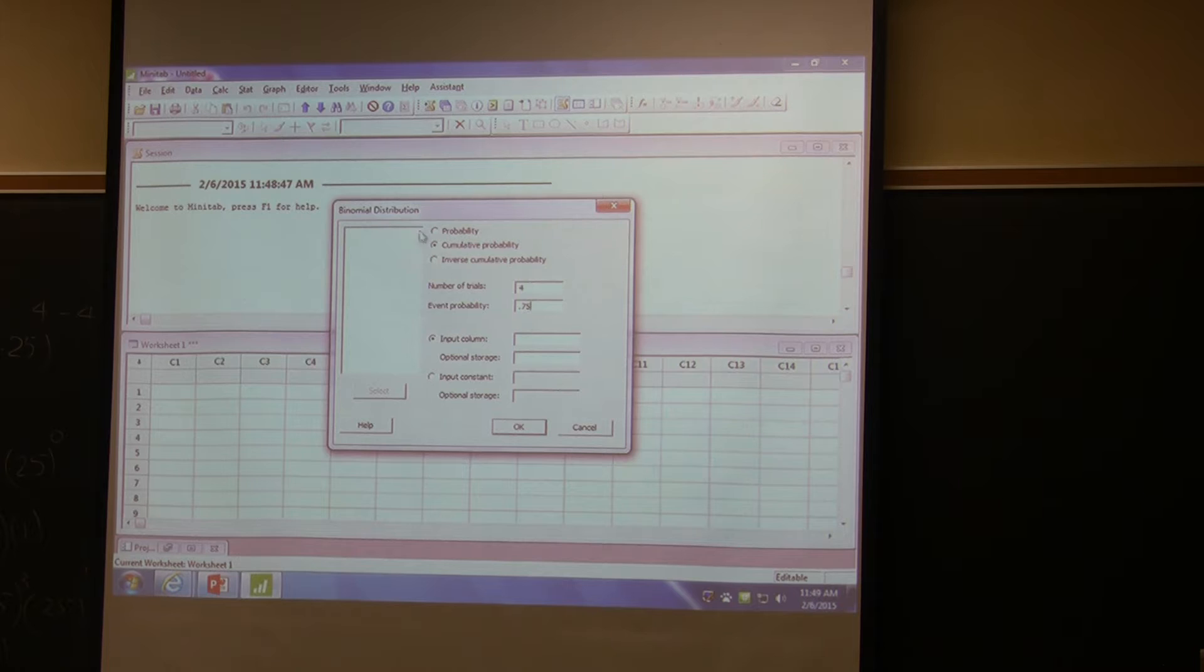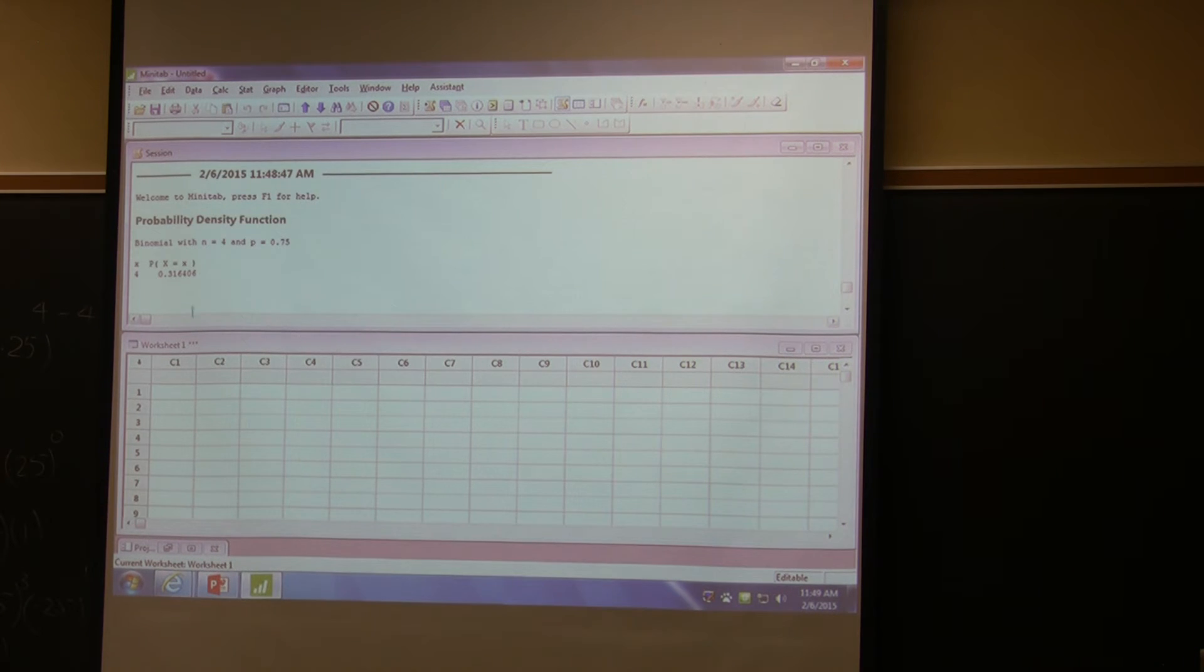Now, in fact, let me do it equal probability. And then input constant is probability x equal to 4. We'll try. 0.3164, the same answer.